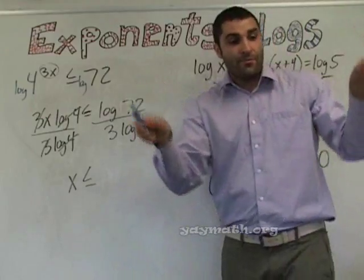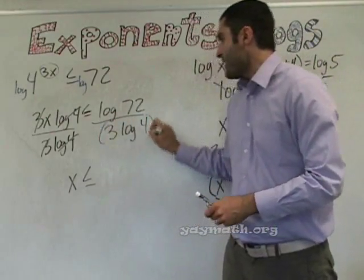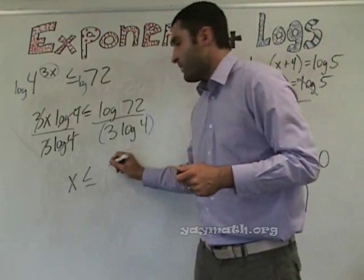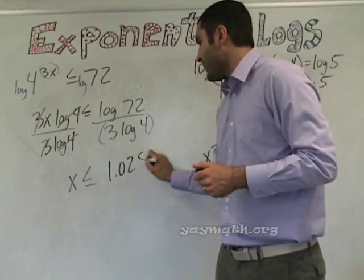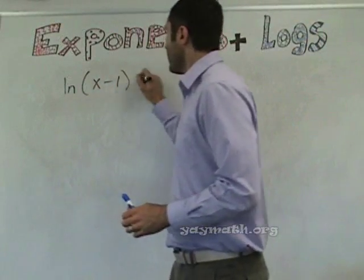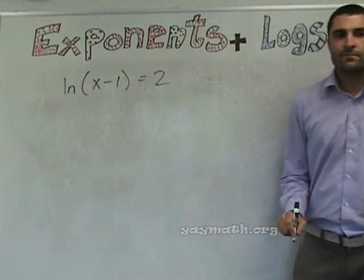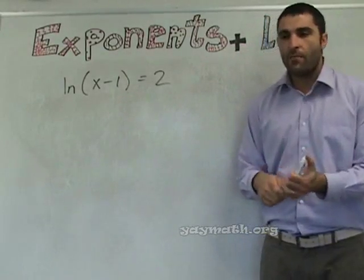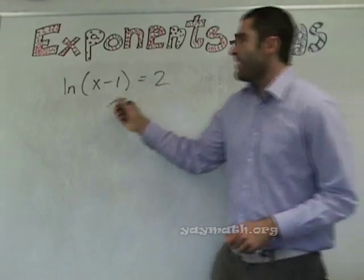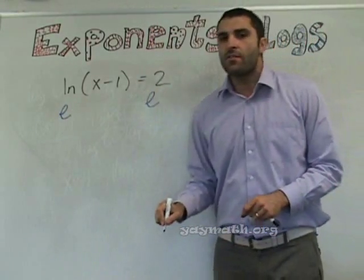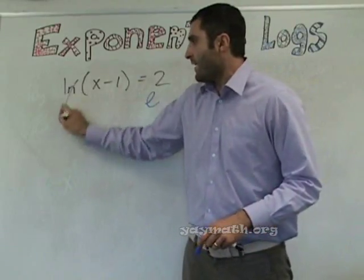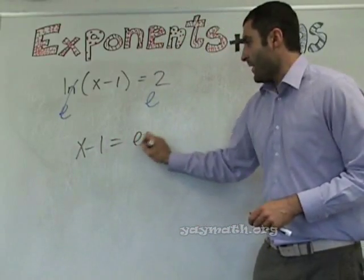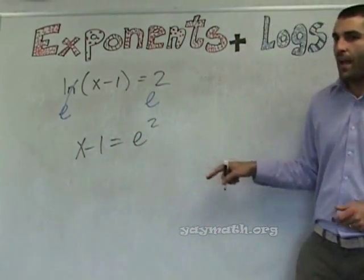x is less than or equal to one point zero two eight. What does ln mean? Natural log. How do we handle a natural log problem? Raise e to both sides — correct. e and ln are inverses of each other, meaning they cancel each other out. So e to the ln is gone and we get x minus one equals e squared. Then we add one to both sides.